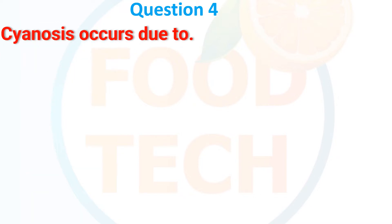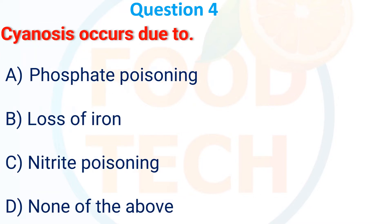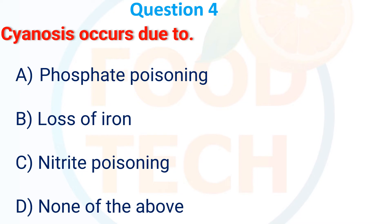Cyanosis occurs due to: A, phosphate poisoning; B, loss of iron; C, nitrate poisoning; D, none of the above. The answer is C, nitrate poisoning.